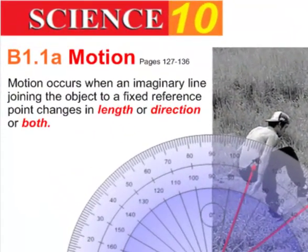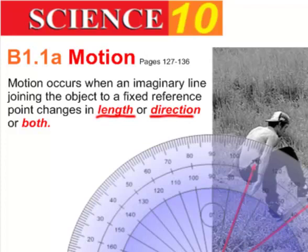Motion occurs when an imaginary line joining the object to a fixed reference point changes in either its length or direction, or it could be both.